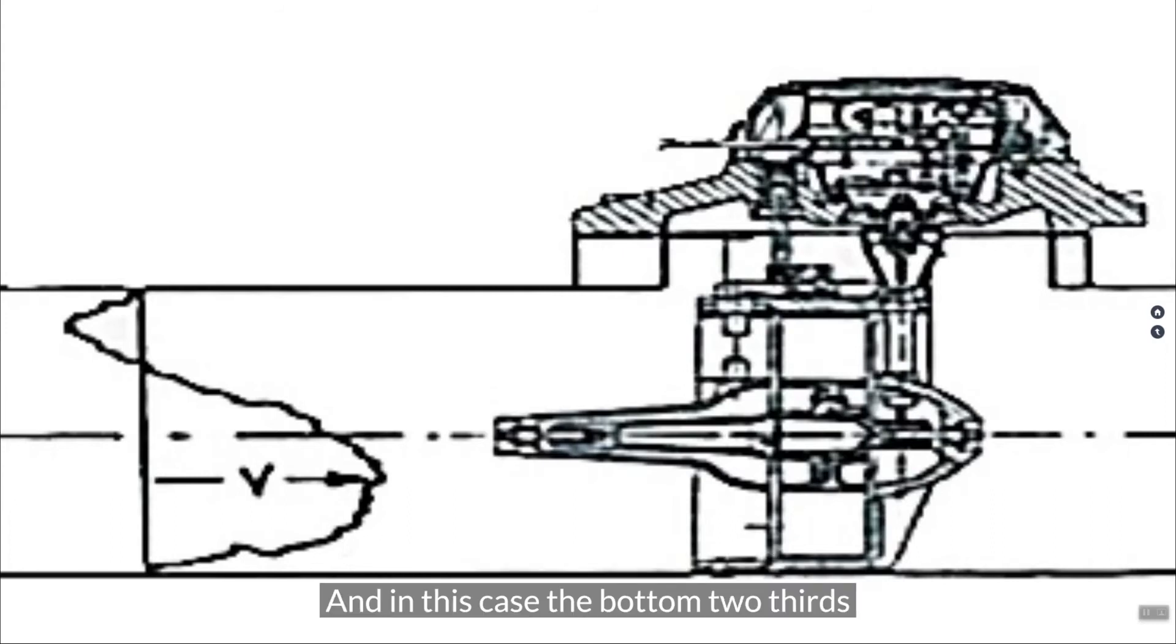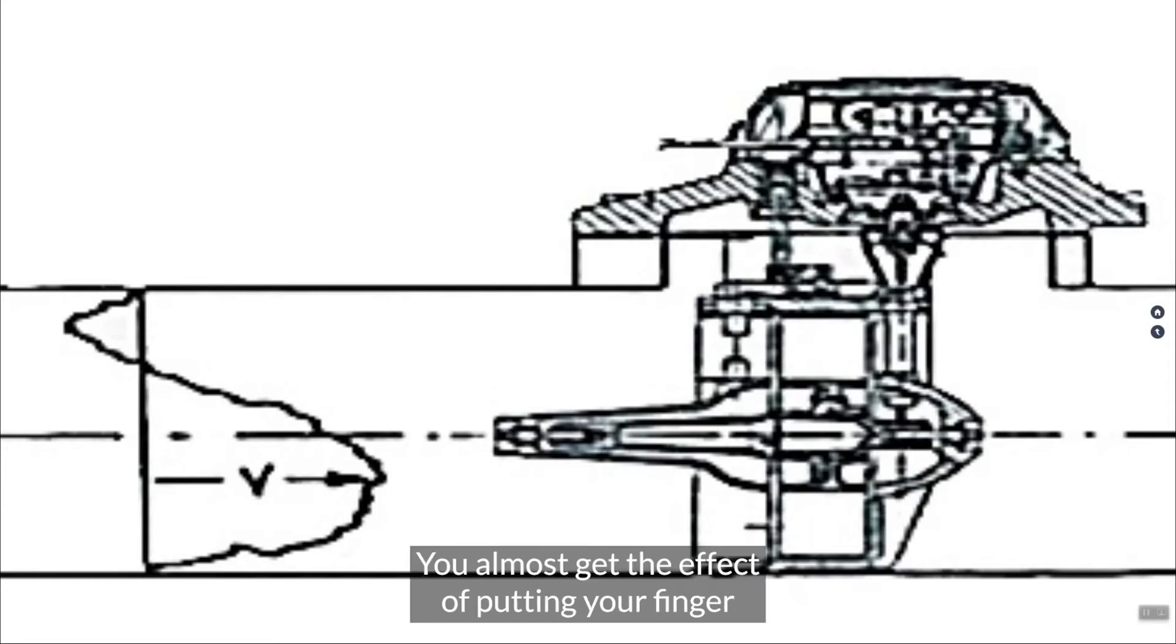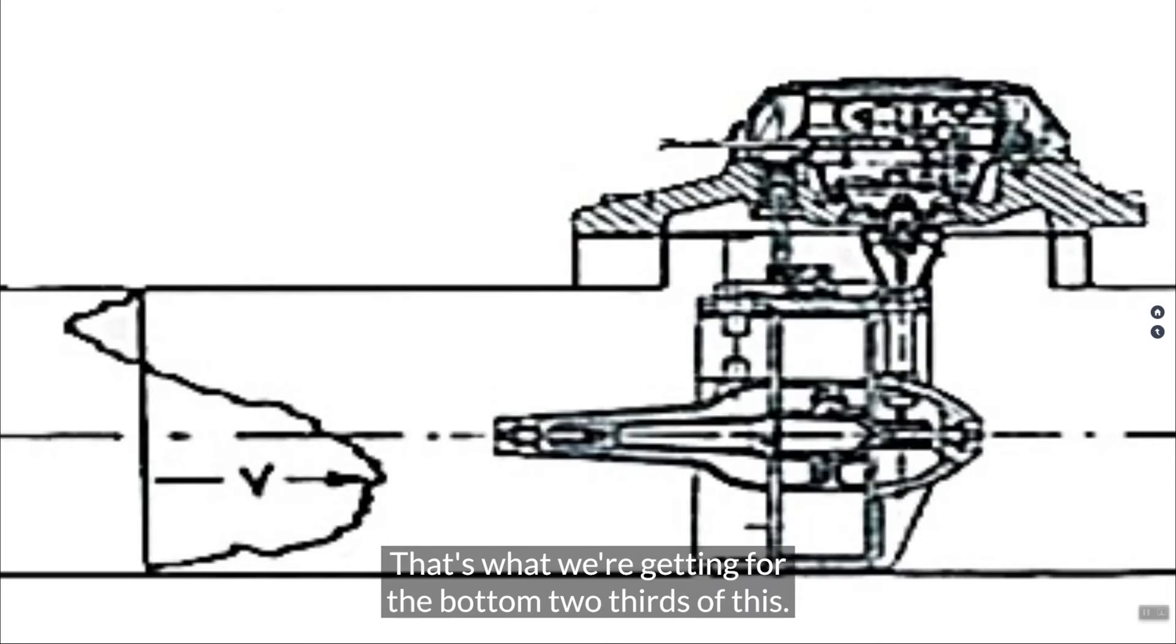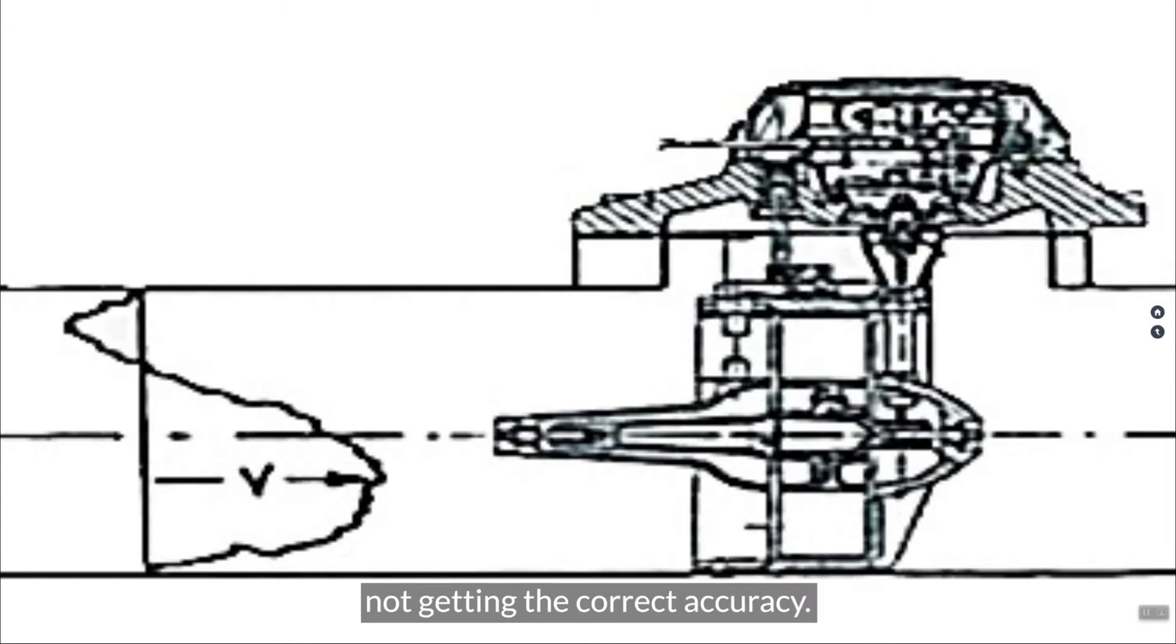And in this case, the bottom two-thirds of this is over-speeding. You almost get the effect of putting your finger over a water hose. You get that jetting effect. That's what we're getting for the bottom two-thirds of this. And again, I'm going to be skewing the velocity profile, not getting the correct accuracy. That's probably a low disturbance.